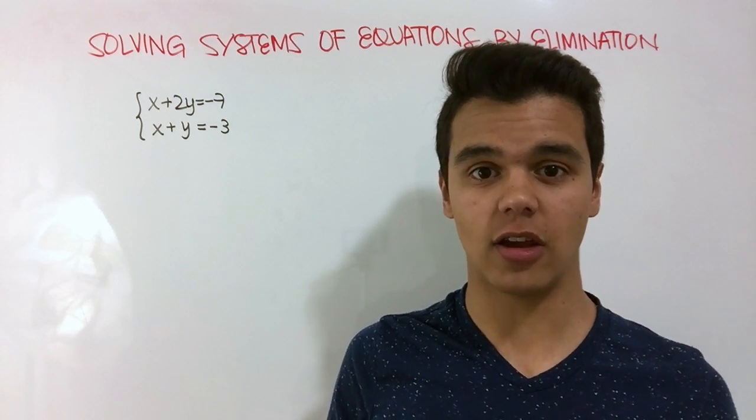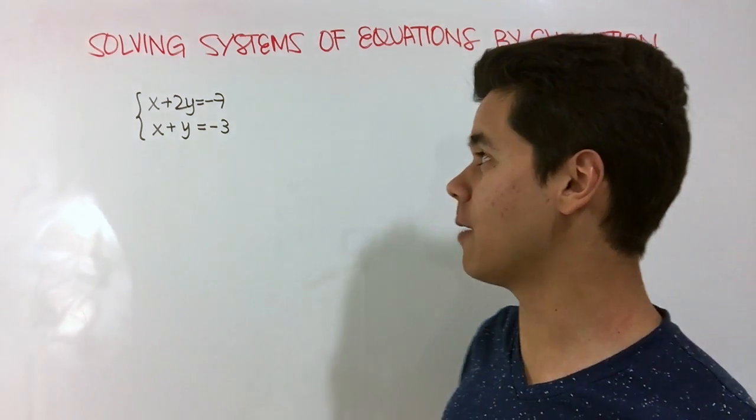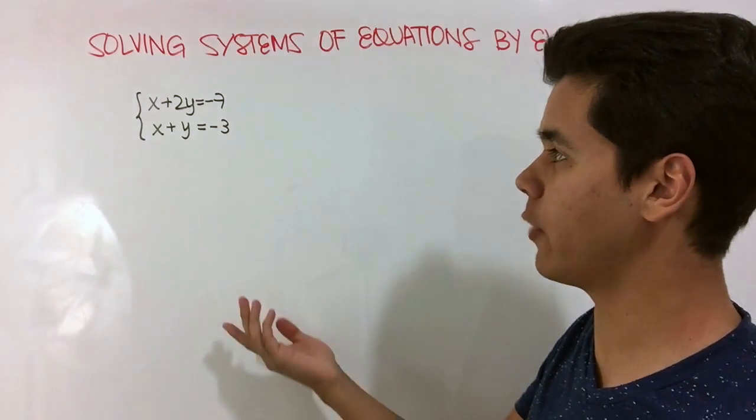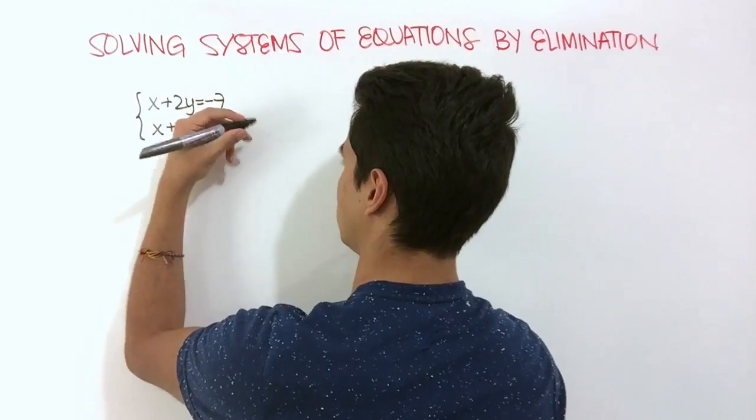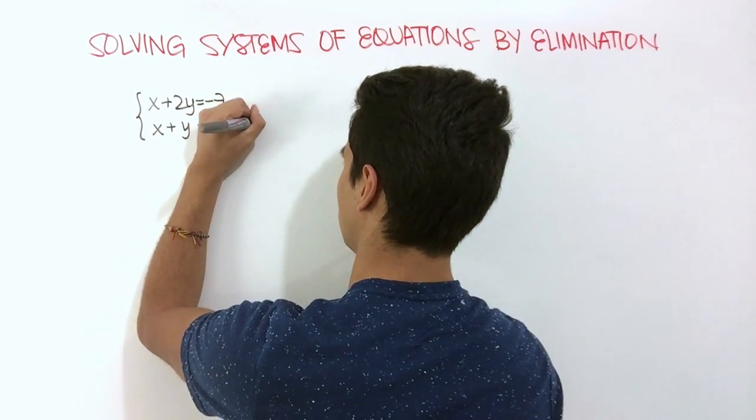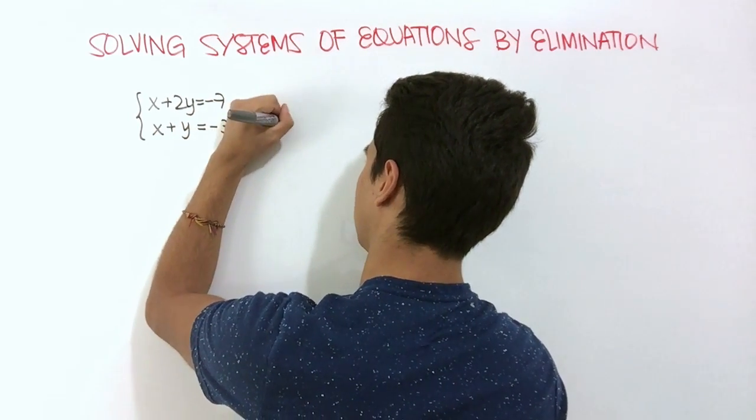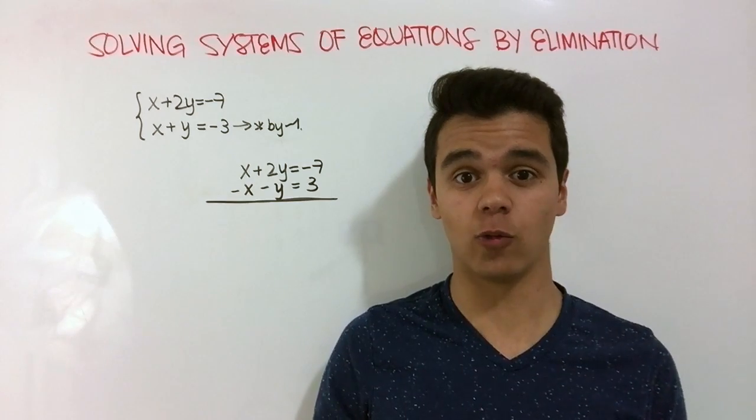In this case, I want to cancel out x, so what I can do is multiply by negative 1 either one of my equations and then add both equations together. So I'm going to multiply this equation by negative 1. Now that we did that, we're gonna add them together.